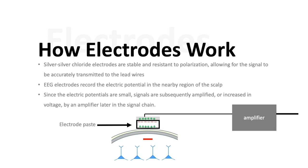It's important to note that silver, silver chloride electrodes are stable and resistant to polarization. So essentially the electrode itself doesn't become overly polarized and this allows for this signal to then be accurately transmitted to the lead wires. So since the EEG electric potentials are small, the signals are then subsequently amplified or increased in voltage by an amplifier later in the signal chain.